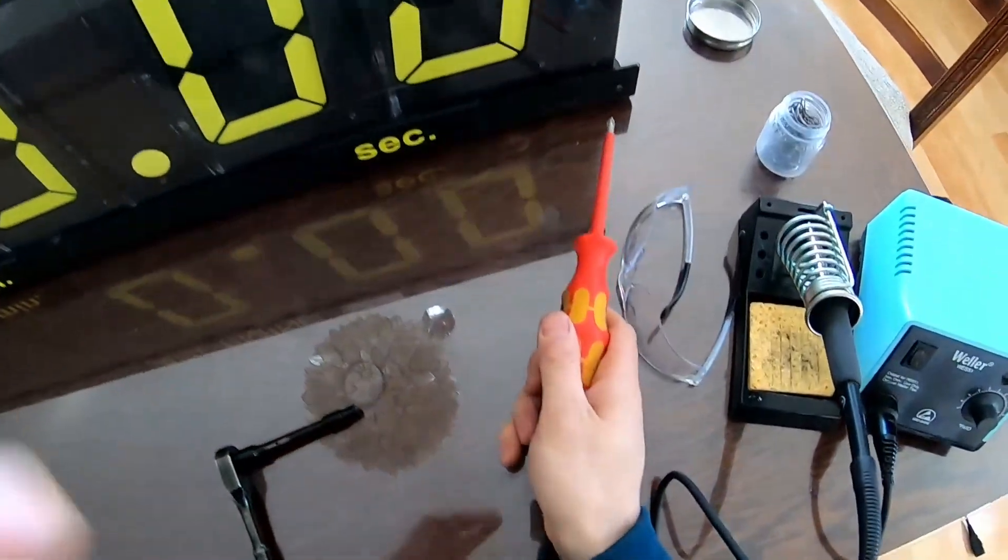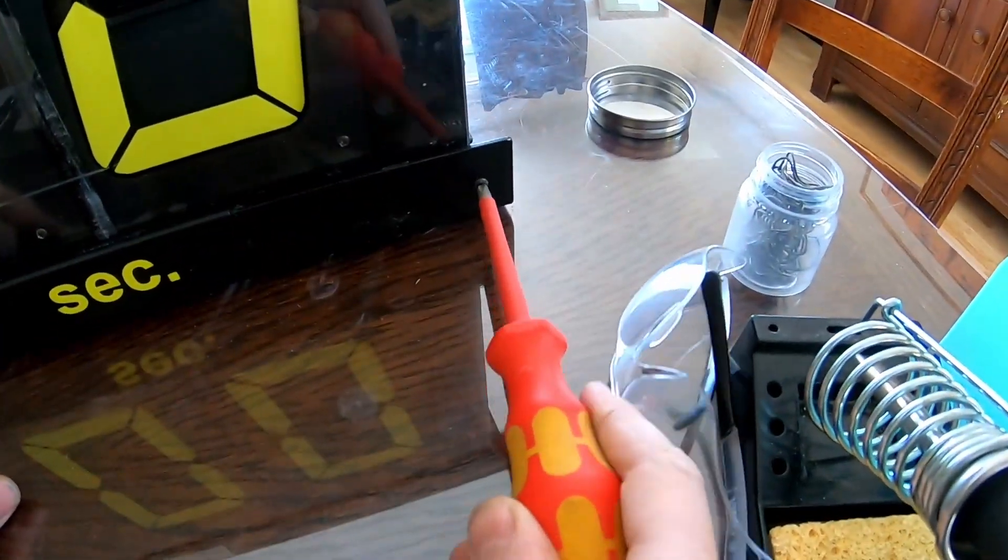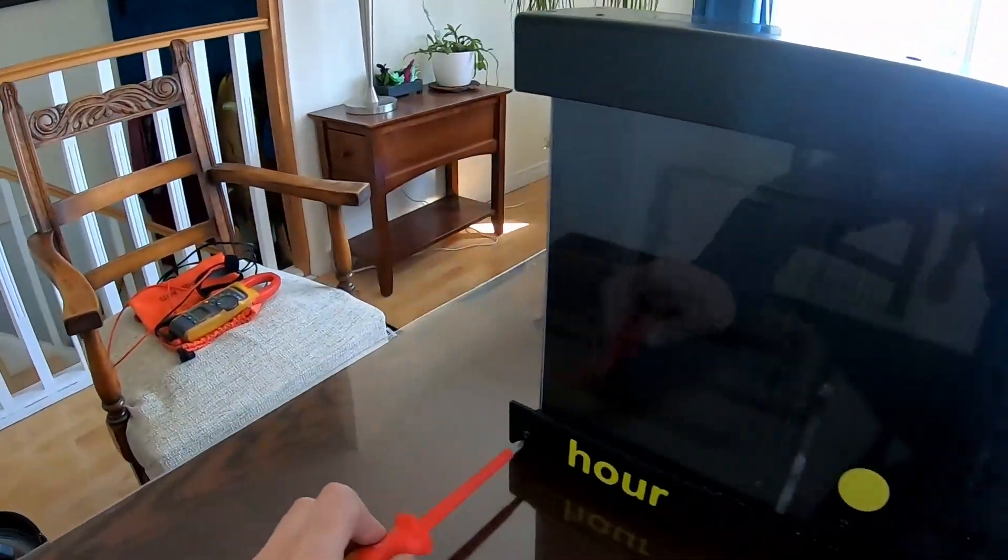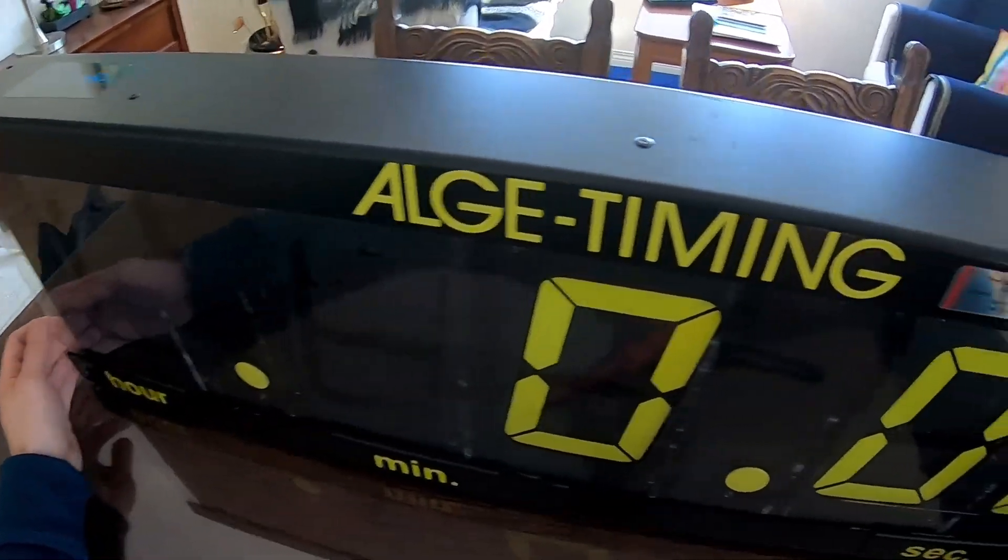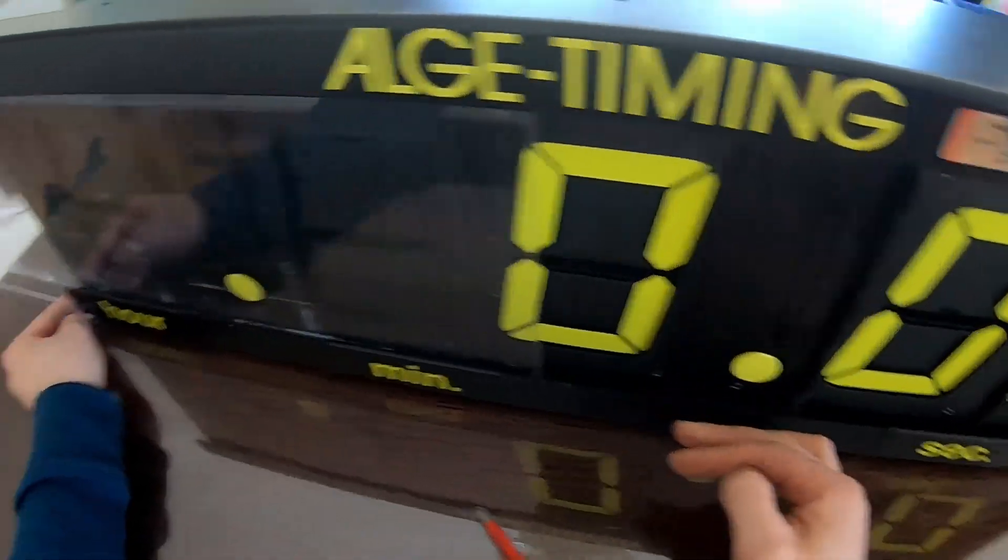First step is we're going to take the screws out. So we start with a Phillips screw here, a Phillips screw here. All right with those screws removed now we can take off this plexiglass cover. It slides right out.